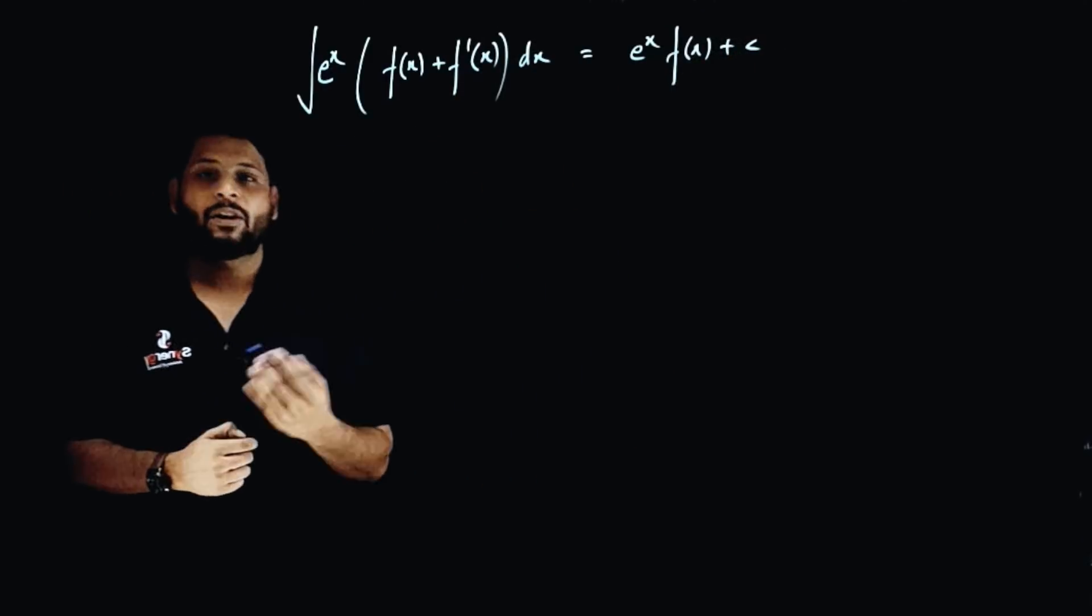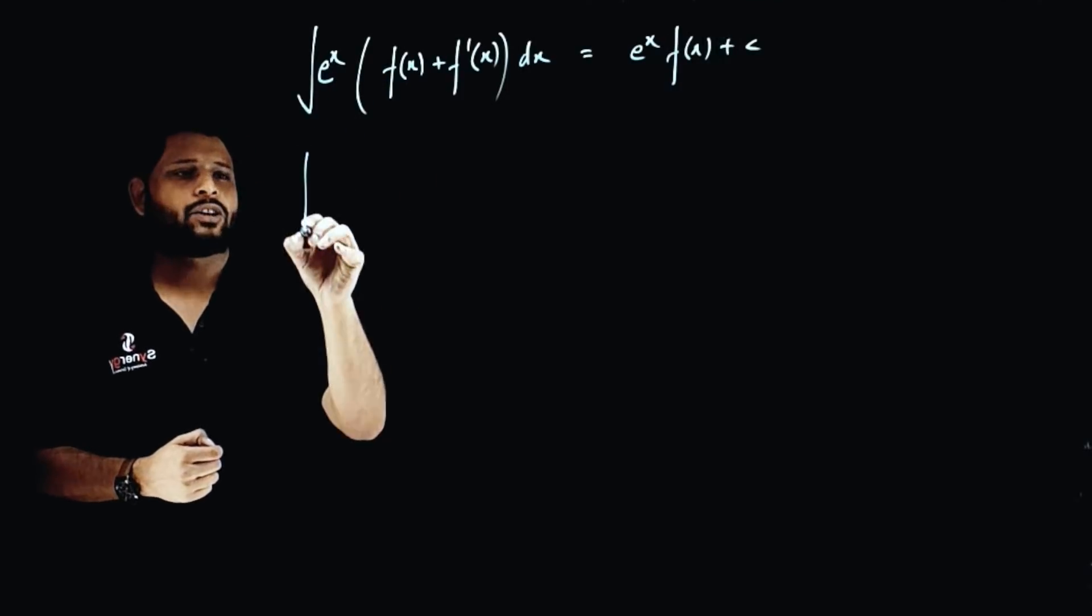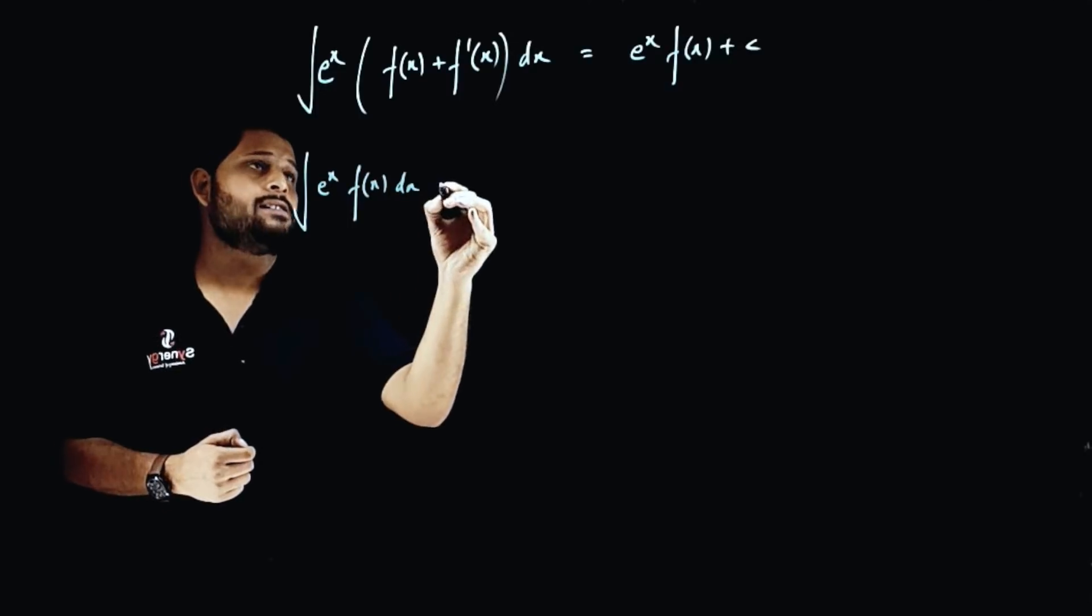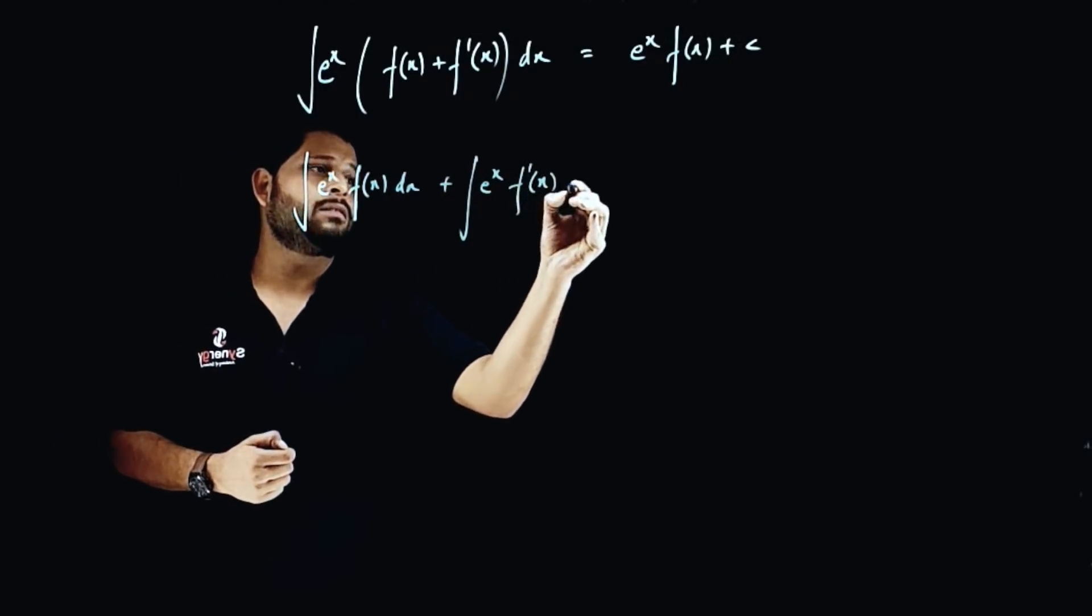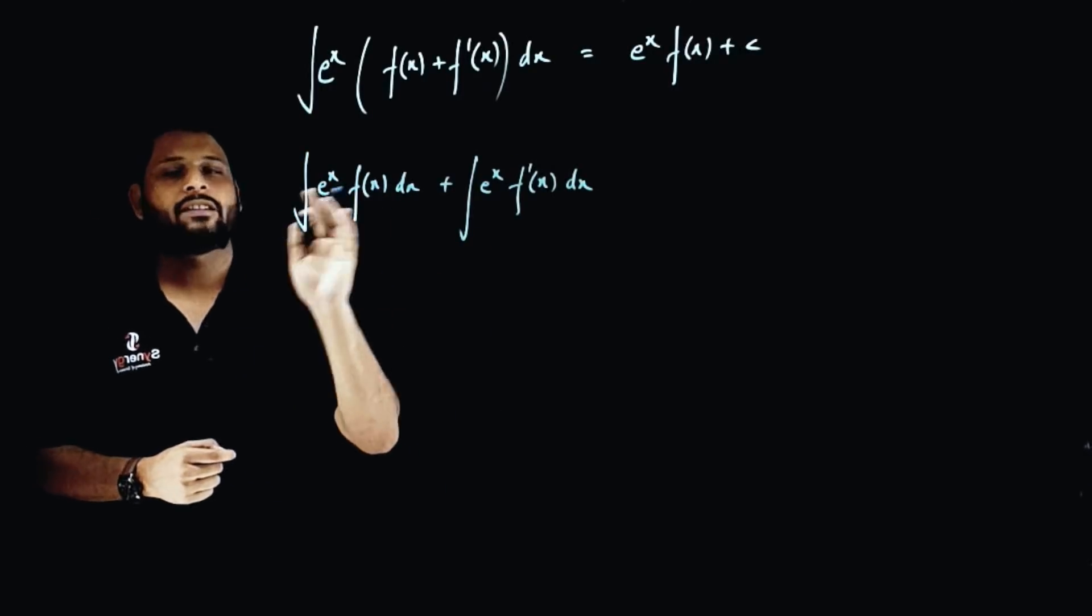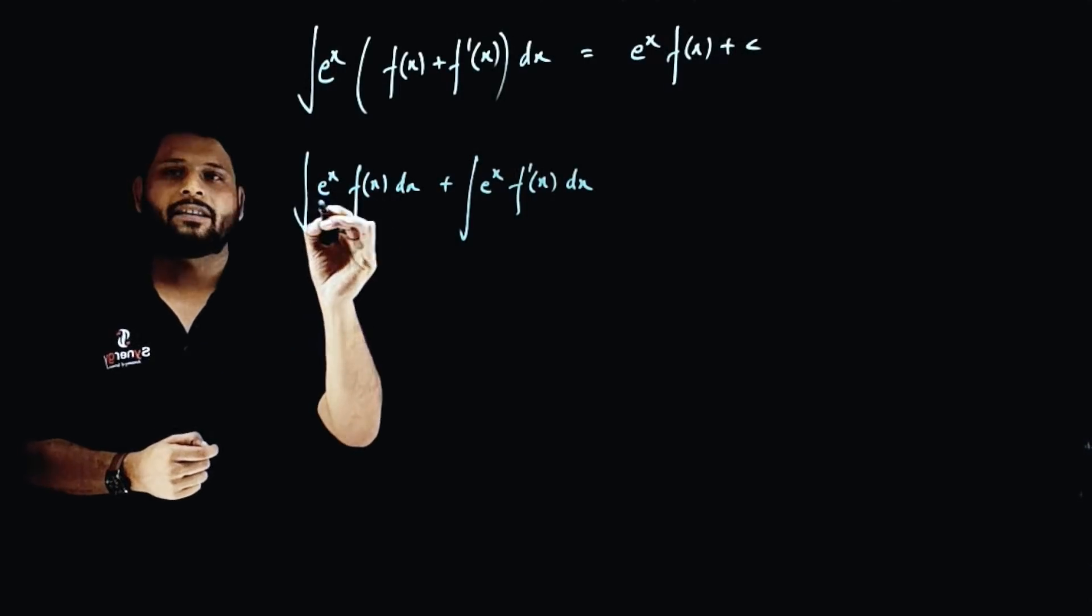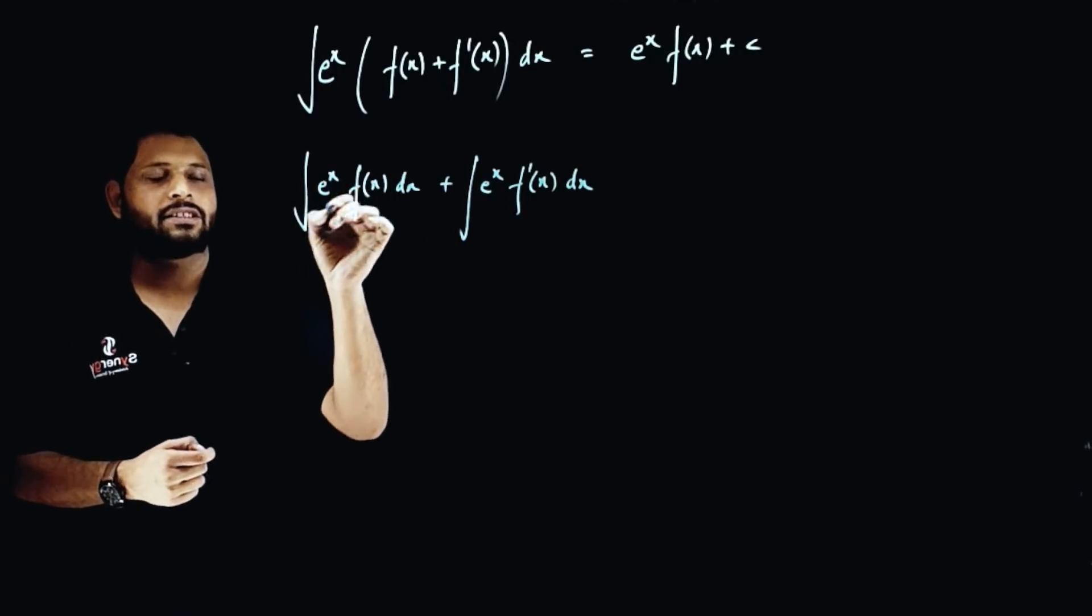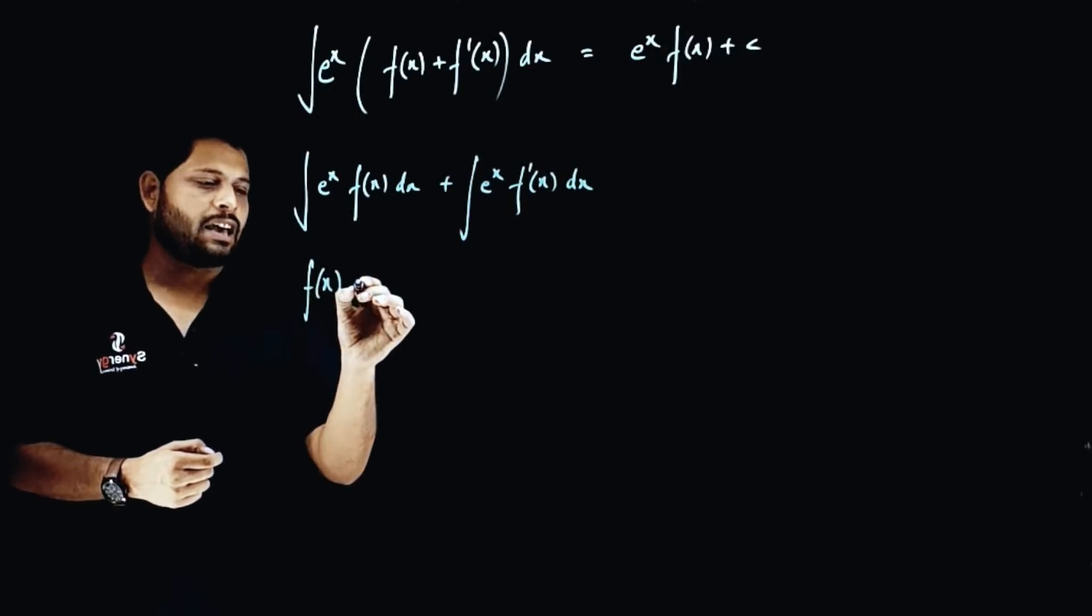You just have to multiply these two and make two different integrals. In this case, this is u and this is v, so I'm going to multiply both of them. I'm taking this function as the first function, this is the second function, so f(x) into integral of something like this.